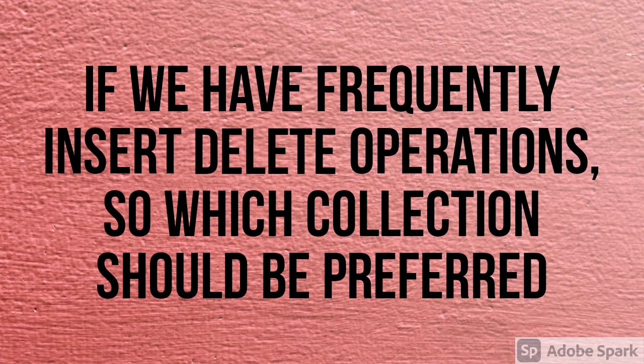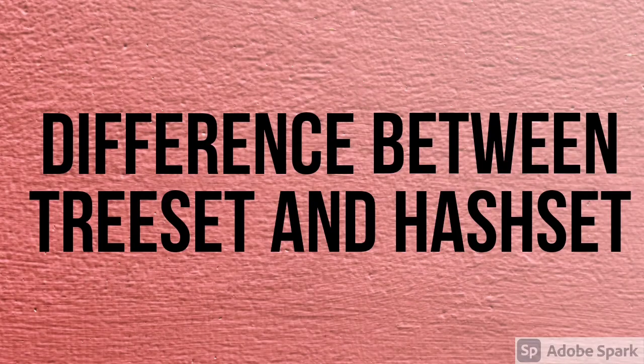The third question was the difference between TreeSet and HashSet. You can say TreeSet maintains order and uses a red-black binary tree as its data structure, but HashSet uses a hash table as its data structure and doesn't maintain insertion order. You can check more differences in any tutorial.